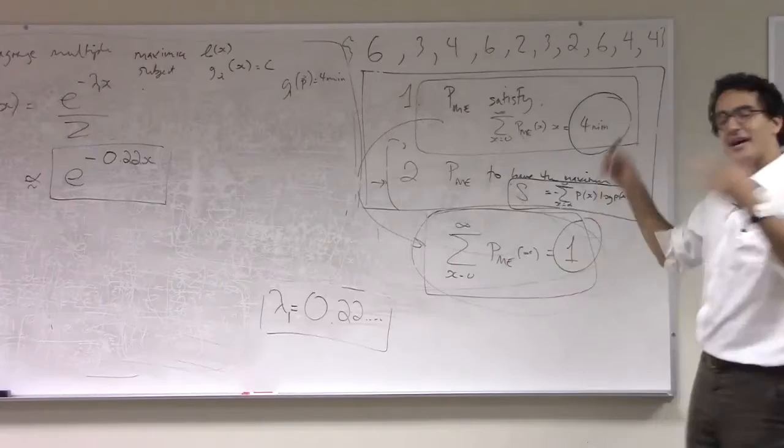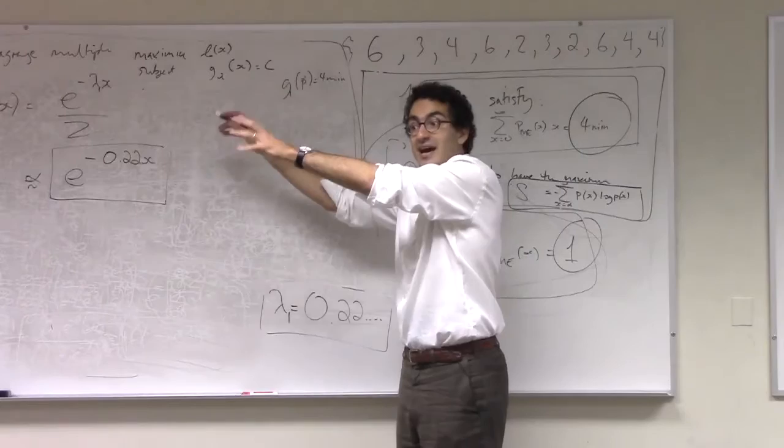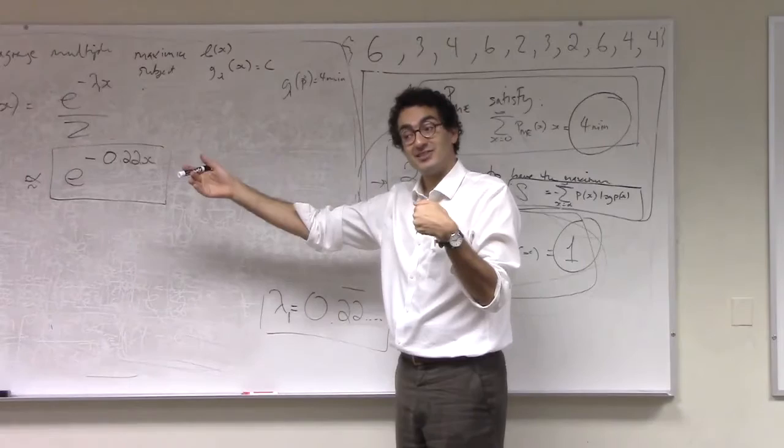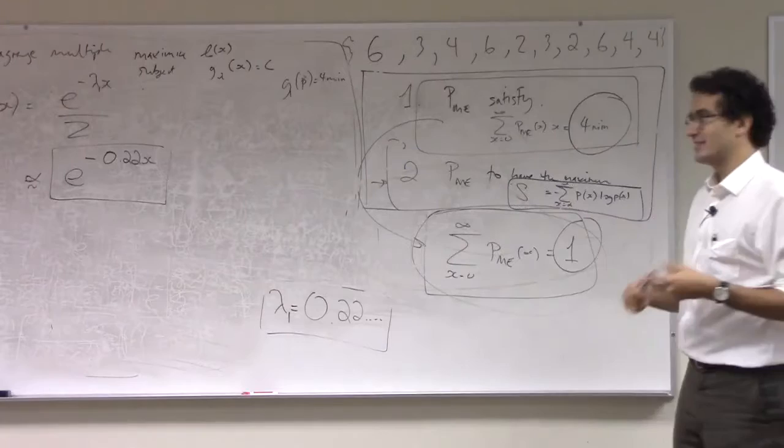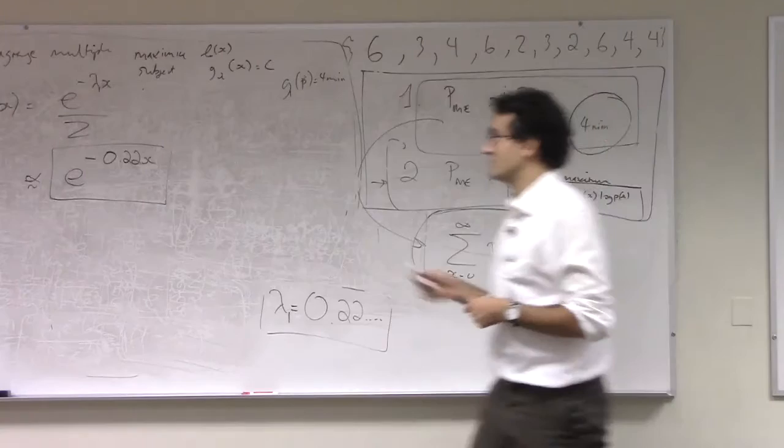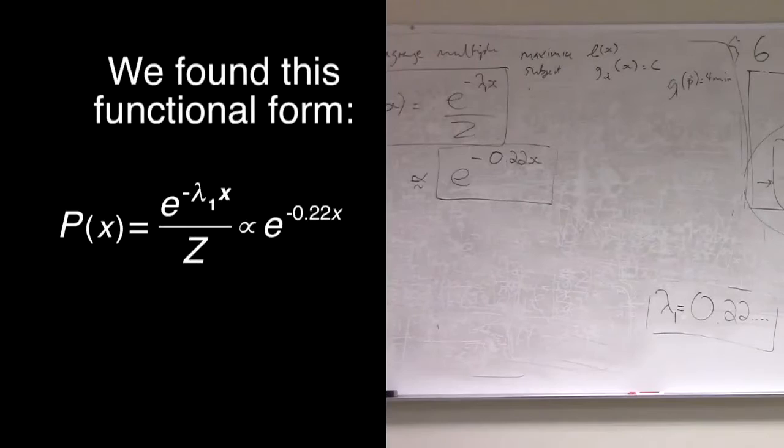So I showed you how to do the Lagrange multiplier trick. I gave you the one-constraint two-dimensional problem, and I sort of told you that the n-constraint problem works out in a very similar fashion. And then I actually worked through the problem of maximizing constraints, or maximizing entropy subject to constraints. And we found a particular functional form, but it was only a functional form because lambda and z, these were the hidden Lagrange multiplier terms. These were terms that I had to set by hand. So I know the functional form right away, but now I have to do the heavy lifting to actually figure out what lambda and z should be.